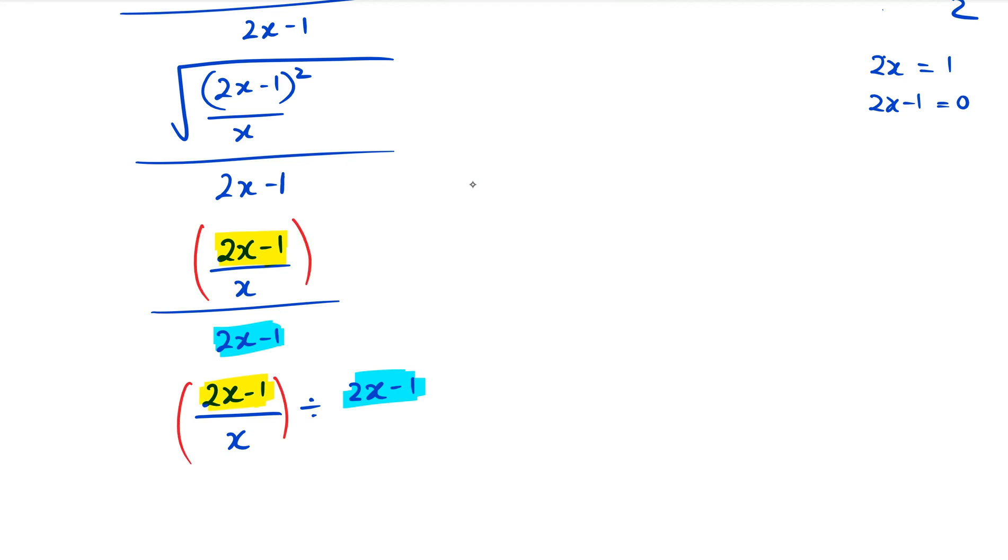At this point, if you remember when you're dividing by something, you can actually multiply by its reciprocal, which means I'm going to multiply by 1/(2x - 1). Because I have 2x - 1 as two common factors, I can get rid of them.